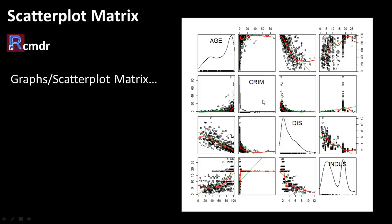Crime is extremely skewed — practically absent in most neighborhoods but with a long right tail showing a few neighborhoods with high crime. Distance is also right-skewed with most values low. Industrialization shows a bimodal distribution with two solid peaks. So the diagonal shows you the histogram of each chosen variable.